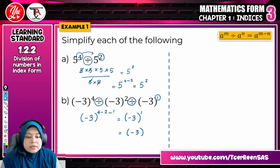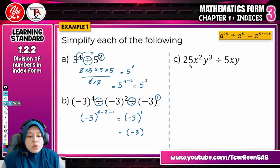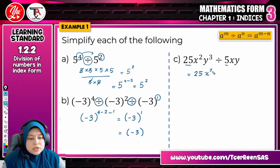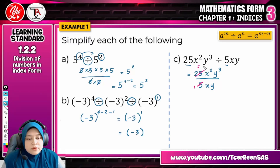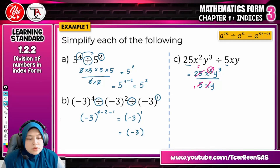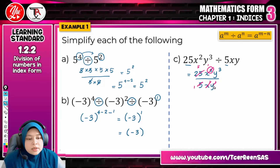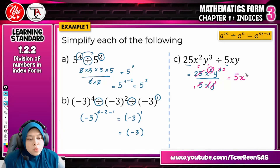Let us look at question C. For question C, there is a coefficient of 25 and 5. To do this easily, you take 25x²y³ divided by 5xy. Simplify the coefficients: 25 divided by 5 is 5. For X: the indices are 2 and 1, so 2 minus 1 equals 1 — you just leave X to the power of 1, which is X. For Y: the index is 3 and 1, so 3 minus 1 equals 2 — you get Y squared. So the final answer is 5XY².